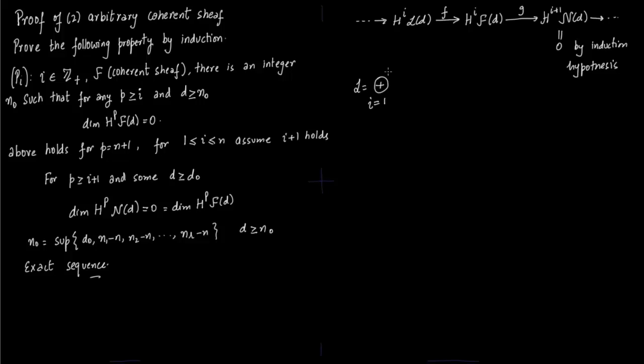What is this sheaf L? We described it in the previous slide. This is OP^n(-ni). Now you shift by d, so instead of -ni you have d-ni.